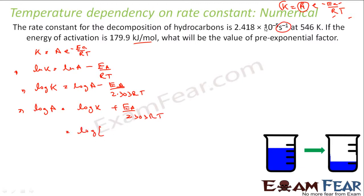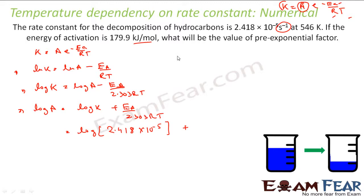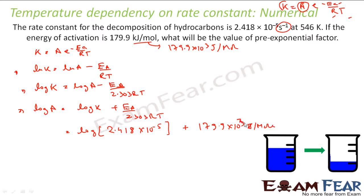Let's substitute the values. Log of K — K is given as 2.418×10⁻⁴ per second. Plus Ea: Ea is given as 179.9 kJ/mol, so we convert it to joules first — that becomes 179.9×10³ joules per mole. Divide by 2.303, R is 8.314, and T is the temperature in Kelvin.